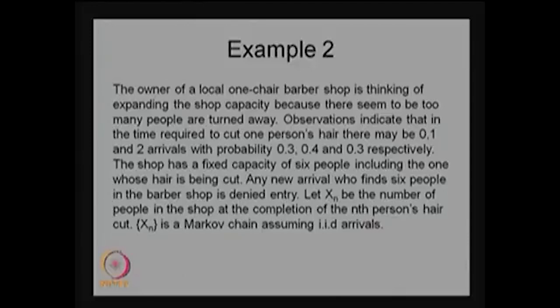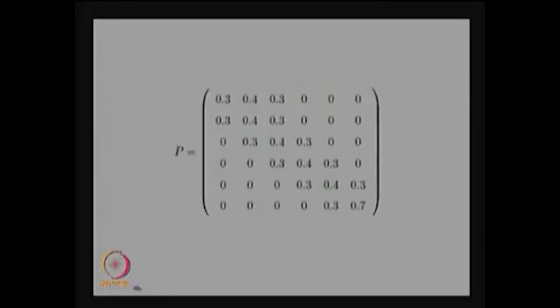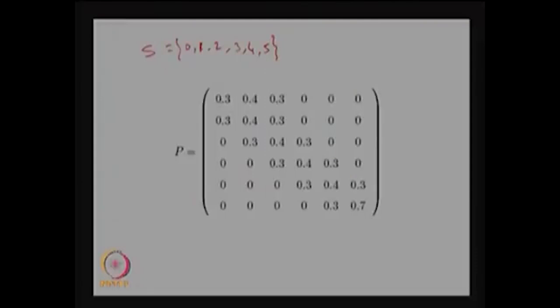In this example our interest is to find the one-step transition probability matrix. The possible states S are 0, 1, 2, 3, 4, and 5 because the capacity of the system is 6. When the nth person leaves, the maximum number remaining will be 5, and there is also the possibility that no one is in the system. This matrix is a square matrix because the state space has a countably finite number of elements.